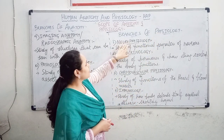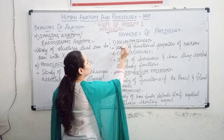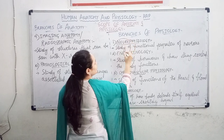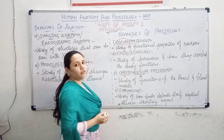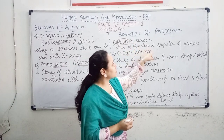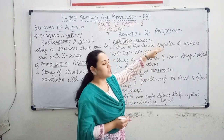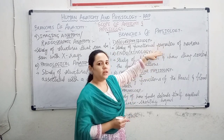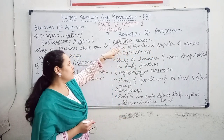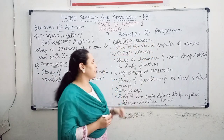The first branch of physiology is neurophysiology. From the name we can see 'neuron' — so this is the study of functional properties of neurons. The study of the functional properties of neurons is called neurophysiology.